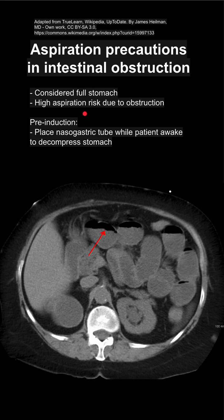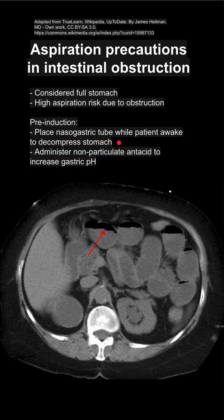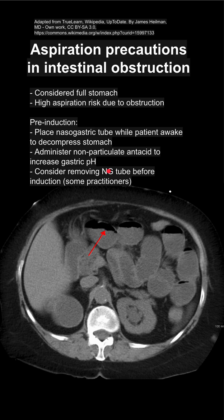Before induction of anesthesia or before placement of a tube, you want to place a nasogastric tube while the patient is awake to decompress the stomach. You can also administer a nonparticulate antacid to increase the gastric pH.